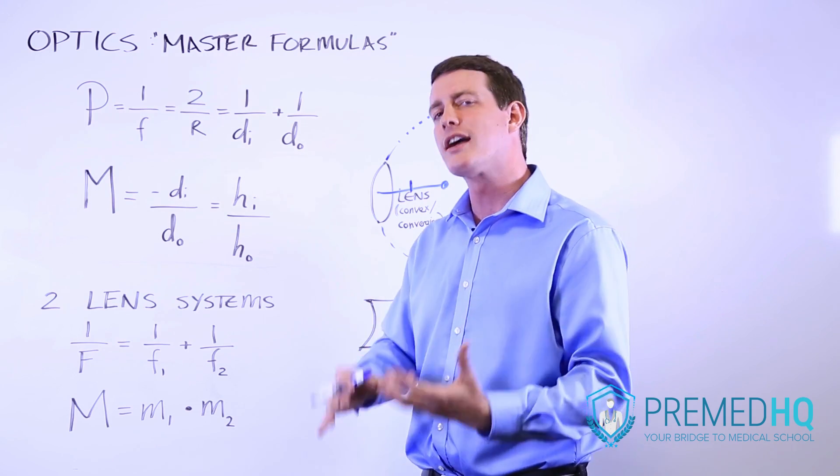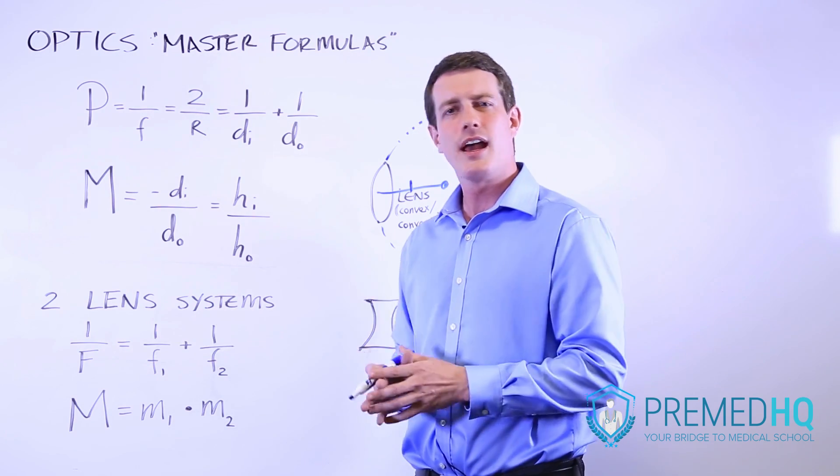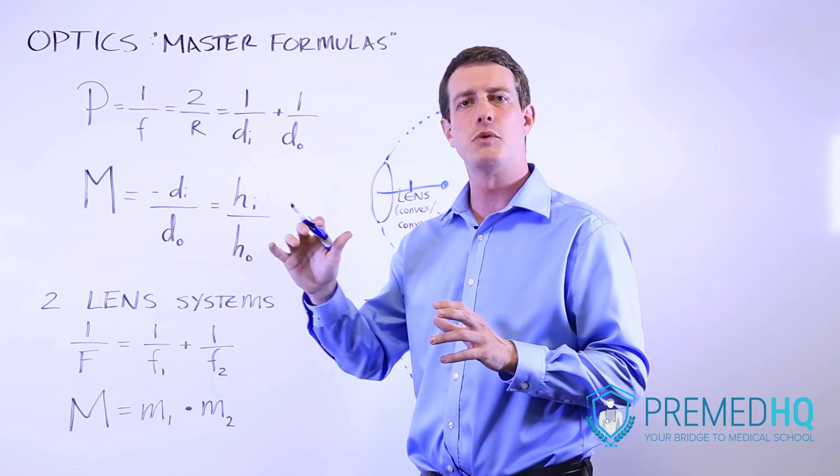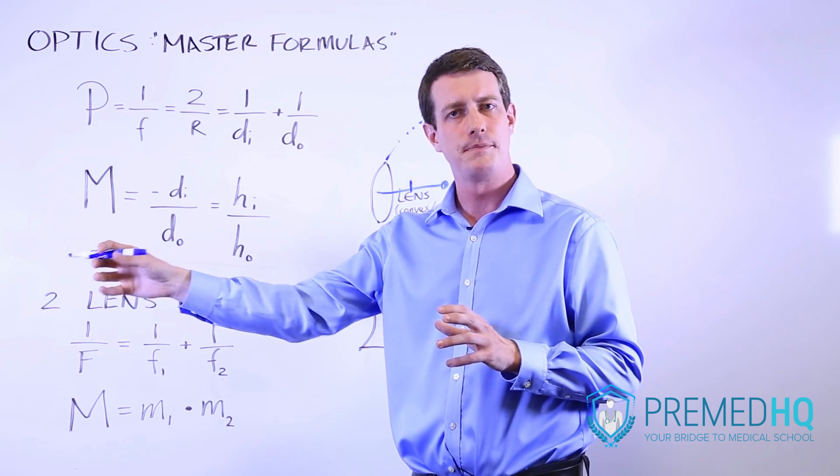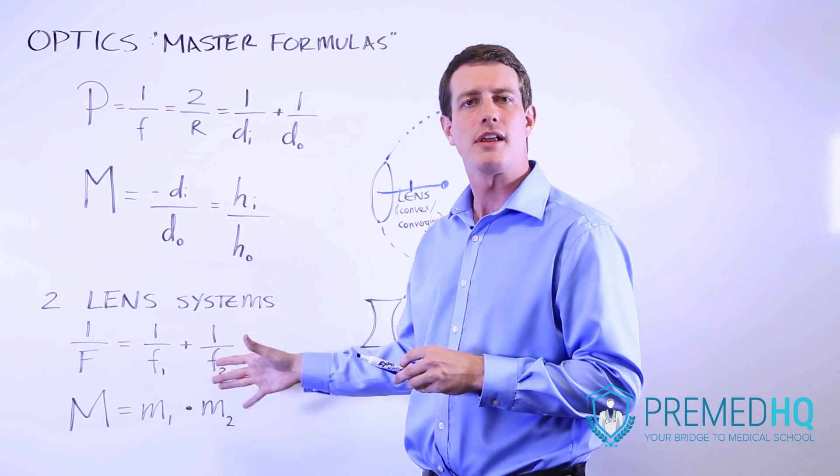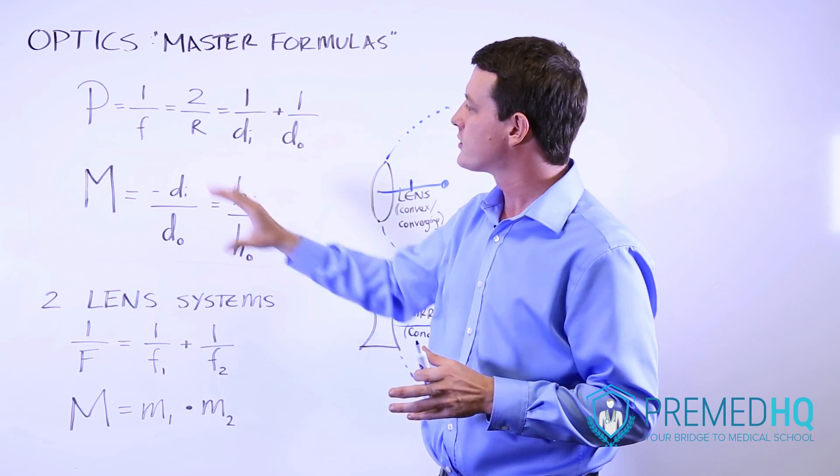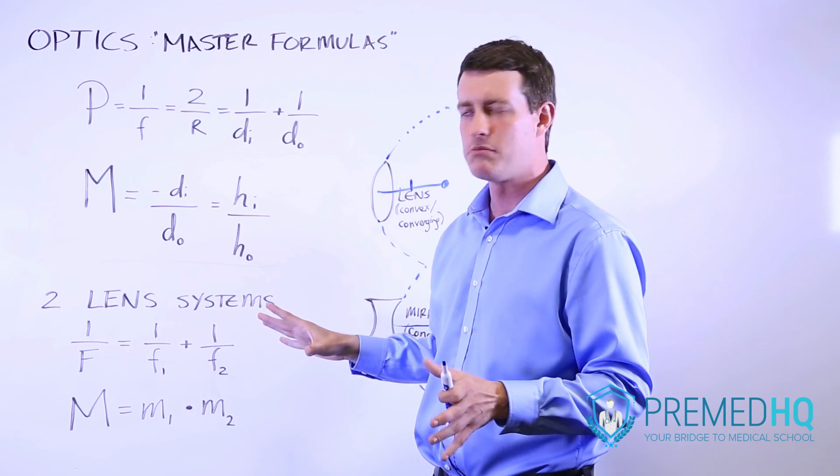If you're wondering what the first or second lens is, the first lens is the one that is closest to the object. And for magnification, you simply multiply these. So those are the core rules, and if you can just master these two formulas you will be in a very good place.